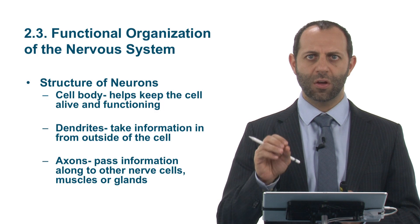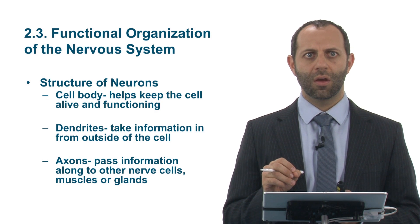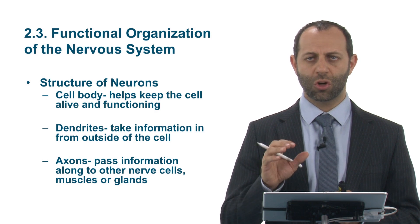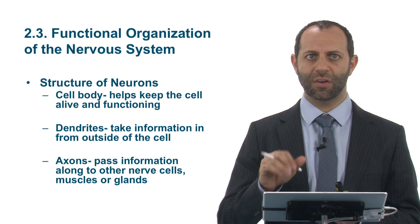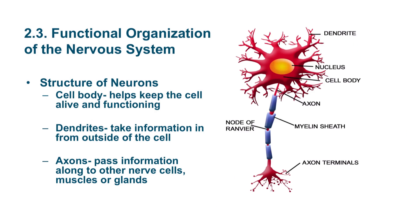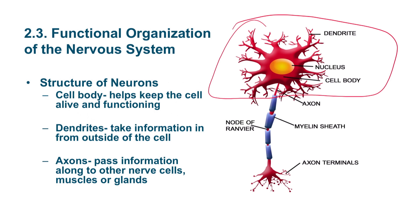Neurons have a very specific structure. There are three parts we'll focus on for the purposes of the CLEP exam. We have the cell body, which contains the central operating system of the cells — it contains the nucleus, where all of the energy is produced and the efficiency of the entire cell is focused.